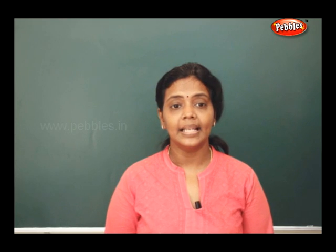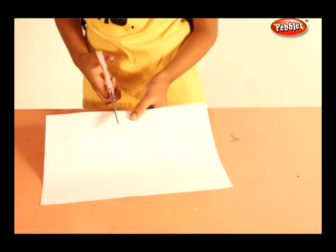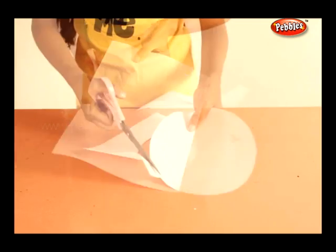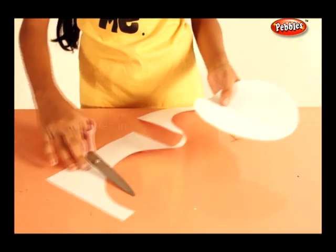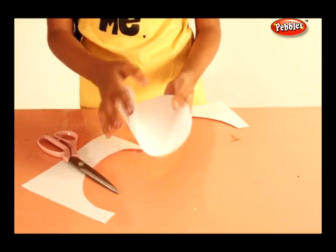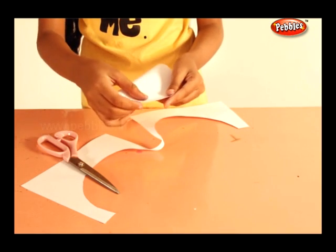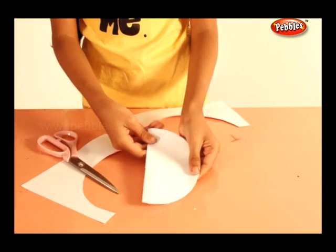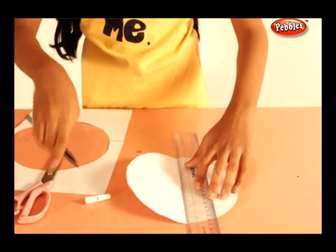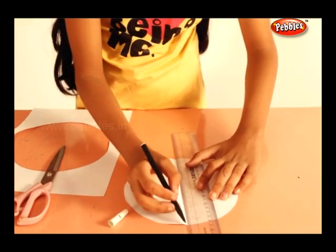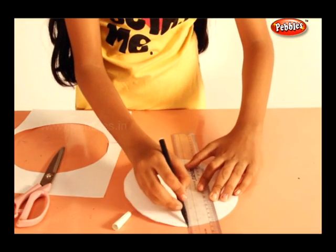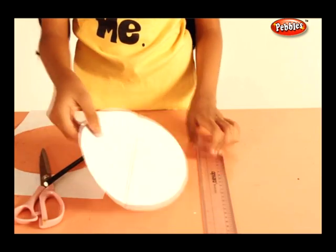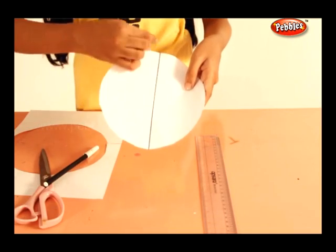Now let us see the line of symmetry. Cut a circular paper and fold it equally. A line divides it into two equal halves — this is called the line of symmetry, which means it is exactly the same on both sides of the line.